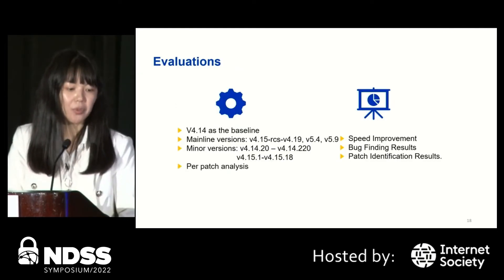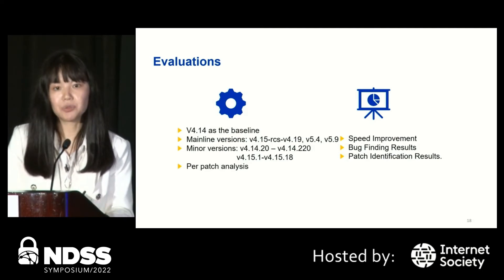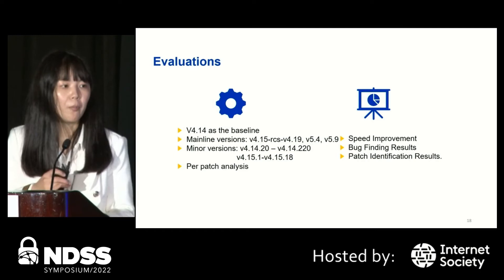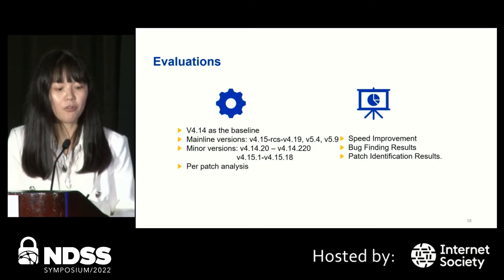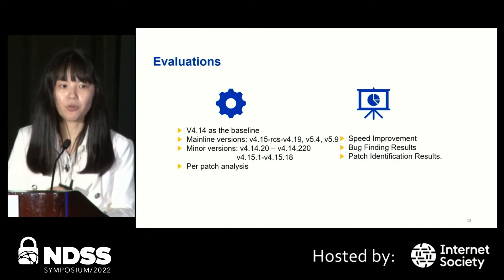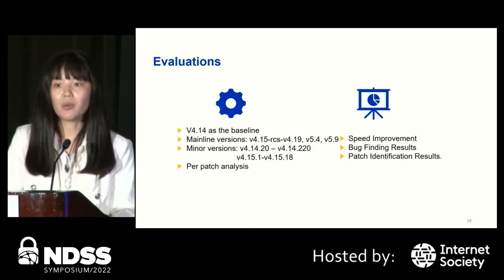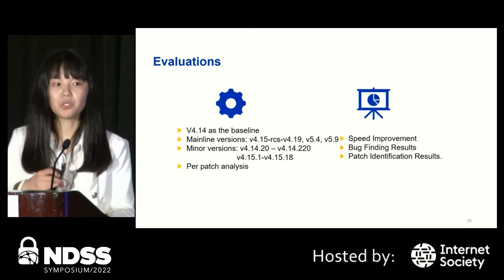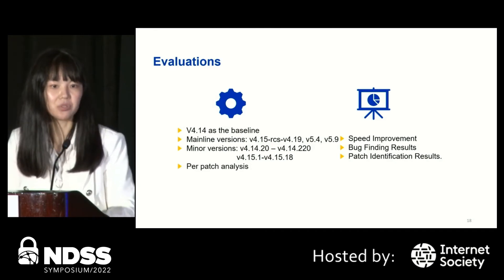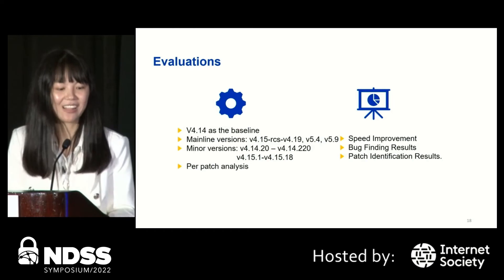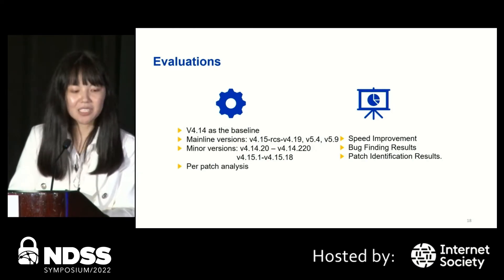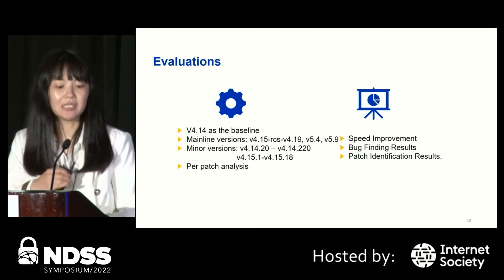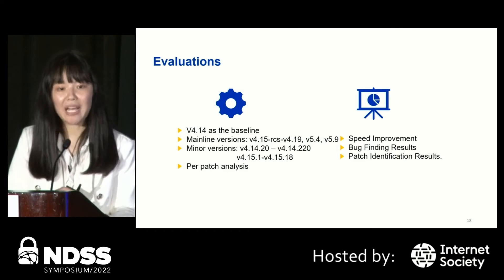Here comes the evaluation. We use version 4.14 as a baseline for the whole-program analysis, then conduct incremental analysis for both mainline variants and minor variants. For mainline variants, we do incremental analysis from variant 4.15 RCs through variant 4.19, then jump to variants 5.4 and 5.9. For minor variants, since 4.14 has over 200 minor variants, we pick every 20 variants to perform incremental analysis. Finally, we select some use-before-initialization patches to perform per-patch analysis. The main evaluation metrics are speed improvement, bug-finding results, and patch identification results.